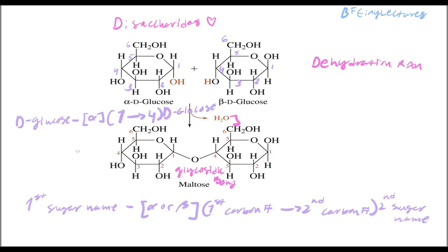To summarize: the name describes whether the anomeric carbon is alpha or beta, which carbon on the first sugar makes the bond, which carbon on the second sugar accepts it, and what the second sugar is. Disaccharides have more variation than monosaccharides — changing from an alpha to a beta glycosidic bond gives a different sugar with different properties, taste, and chemical characteristics.